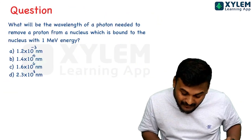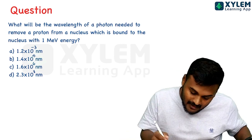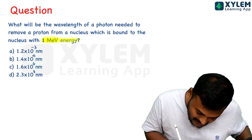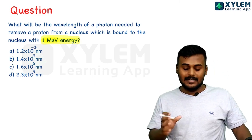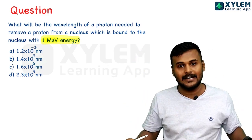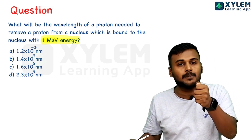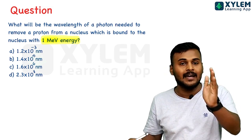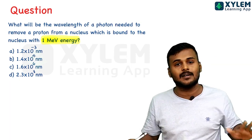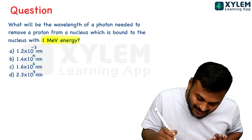What will be the wavelength of the photon needed to remove a proton from a nucleus which is bounded with the nucleus of one mega electron volt energy? It is very simple. We will use the wavelength of incident light and the energy to bind the proton nucleus in electron volts.